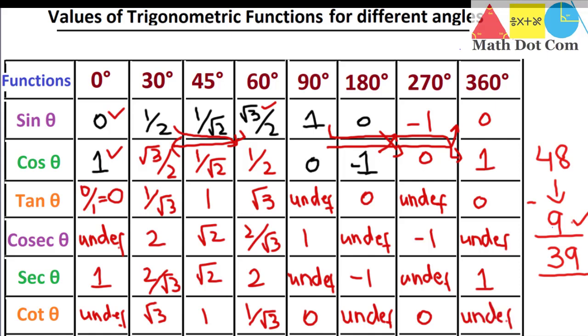So I have derived all the values from the 9 memorized values, and it's very easy this way. Otherwise it would be difficult to memorize all 48 values in the table. I hope this helps you. Keep this in mind: you only need to memorize the 9 values written in black, and the remaining 39 values will be derived from those. That's all from today's lecture. Thank you.